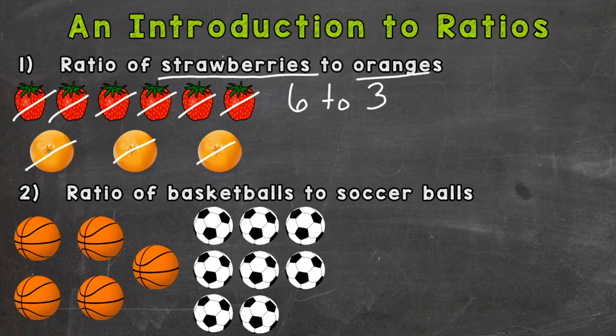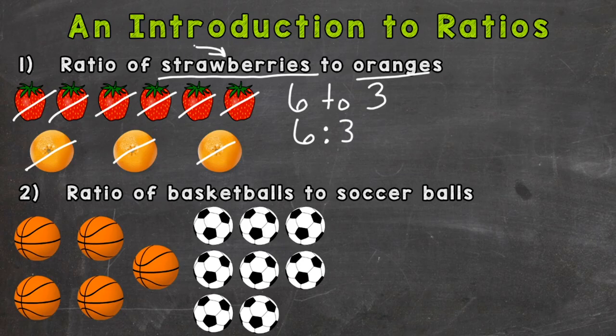So we have six strawberries to how many oranges? Well, one, two, three. Six to three. So this shows for every six strawberries there are three oranges. And again, strawberries has to come first, the six, because it comes first in our ratio problem. Right, strawberries to oranges. We can also use a colon to represent this ratio, so six to three.